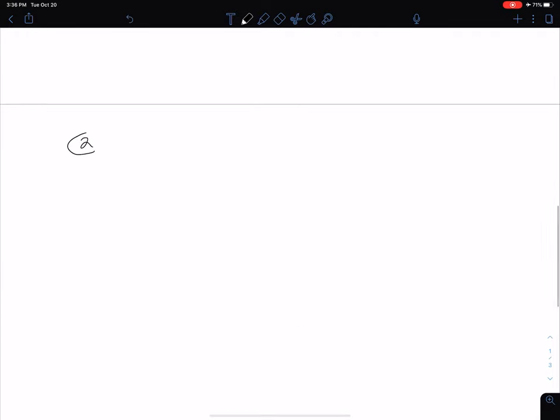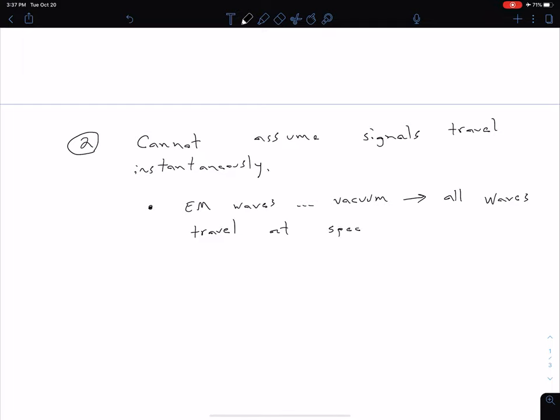The second problem we run into is that we can't assume our signals travel instantaneously anymore, so we cannot assume signals travel instantaneously. So let's take a step back and say, well, when we're talking about these signals, we're ultimately talking about electromagnetic or EM waves. And so in an ideal case, let's assume a vacuum. So what that means is all waves are traveling the same speed of light, travel at speed of light. And so remember that speed of light we usually say as C, and it's equal to approximately 3 times 10 to the 8 meters per second.